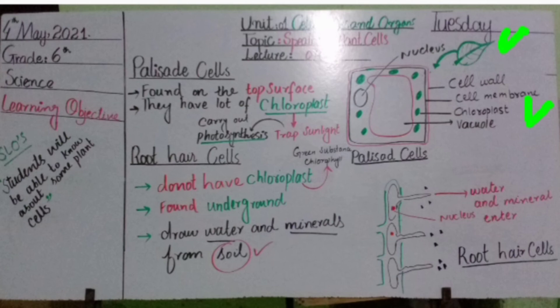Next: root hair cells. Root hair cells do not have chloroplasts. The color of the root is brown and light yellow because they do not contain chlorophyll, so the color is not green. Root hair cells are found in the underground part of the soil where roots occur.